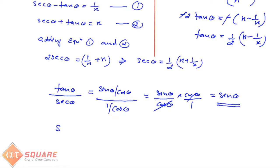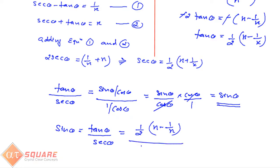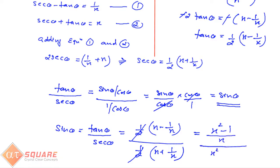So sin θ = tan θ / sec θ. Substituting the values: numerator is ½(x - 1/x) and denominator is ½(x + 1/x). The ½ cancels. Taking LCM, this becomes (x² - 1)/x divided by (x² + 1)/x, and the x values cancel out.